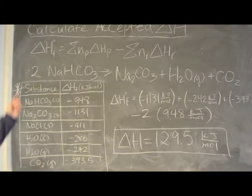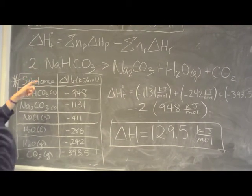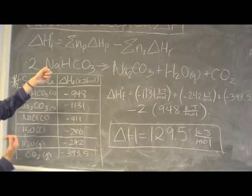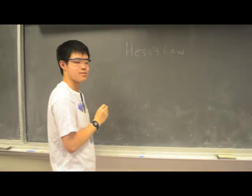Now we have to calculate the accepted delta H value and use this equation. The delta H is equal to 130.5 kilojoules per mole.